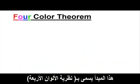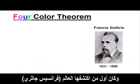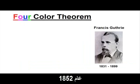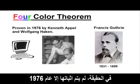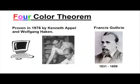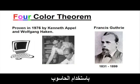This principle is called the Four-Color Theorem and was first discovered by Francis Guthrie in 1852. But Guthrie didn't actually prove the theorem. In fact, it wasn't proven until 1976, when it was the first major theorem to be proven using a computer.